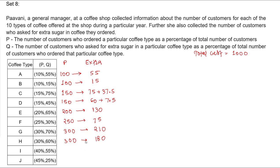Coffee type I: 40 percent of 1000 is 400, and 55 percent of 400 — 50 percent is 200 plus 5 percent is 20, giving 220. Coffee type J: 45 percent of 1000 is 450, and 25 percent of 450 — one-fourth of 450 — is 112.5.